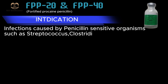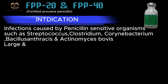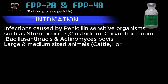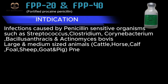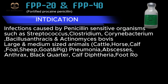Infections caused by Clostridium, Corynebacterium, Bacillus anthracis, and Actinomyces bovis. For large and medium-sized animals — cattle, horse, calf, foal, sheep, goat, and pig — conditions include pneumonia, abscesses, anthrax, black quarter, calf diphtheria, and foot rot.